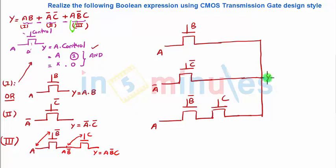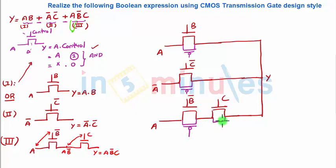To convert to a transmission gate implementation, draw a PMOS transistor in parallel to each existing NMOS transistor. When an NMOS is used alone it is a pass transistor, but adding a parallel PMOS creates a transmission gate. Apply this to every NMOS in the circuit: each one gets a parallel PMOS, converting all pass transistors into transmission gates.